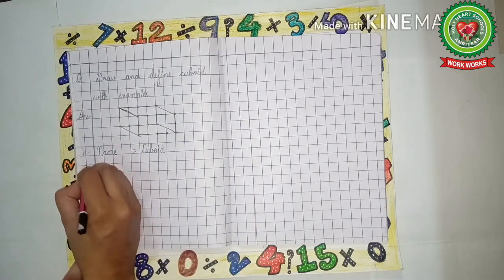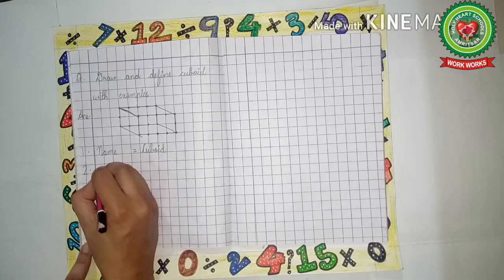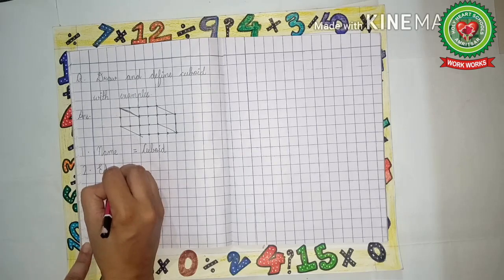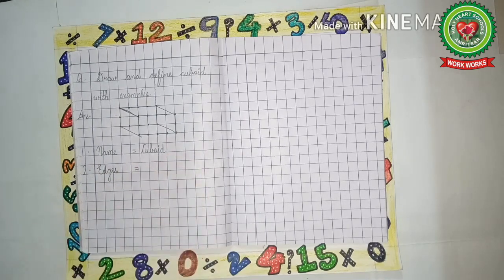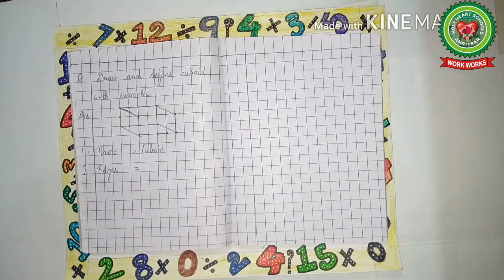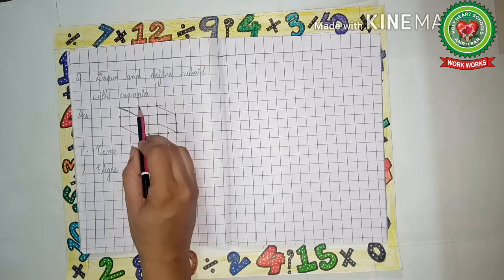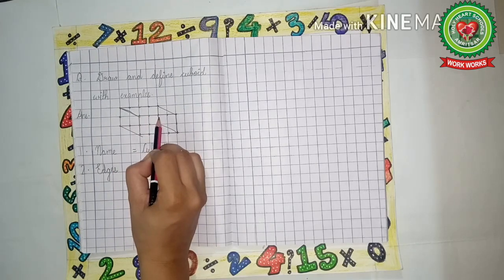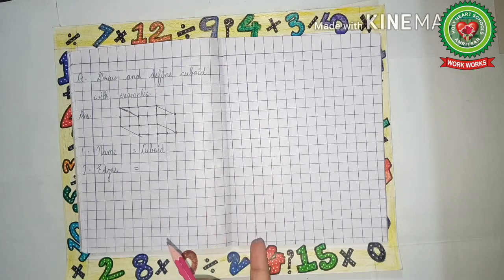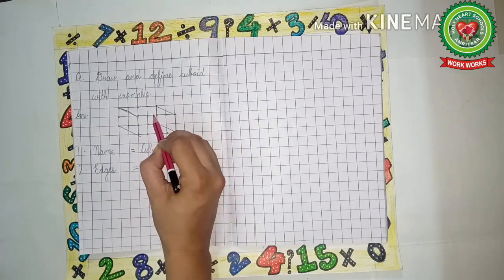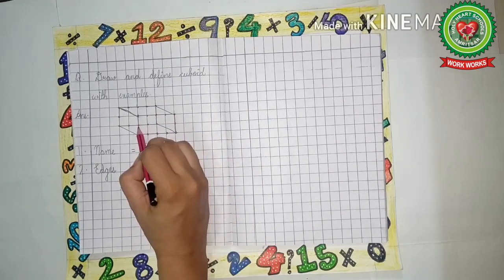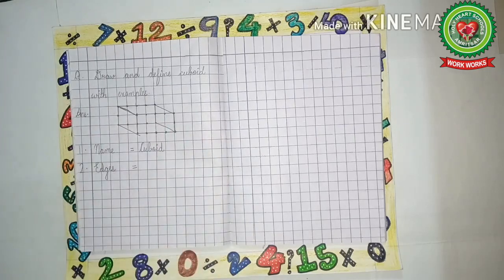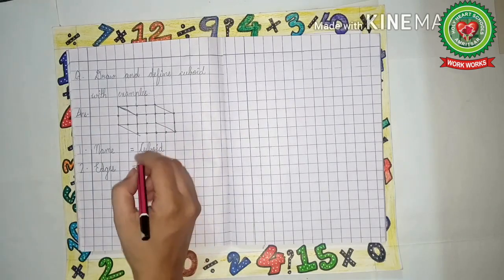Leave one line. Two dot: Edges. Edges are the sides, so let's count the sides. In first rectangle there are four sides—one, two, three, four. Now we will count the sides of second rectangle—five, six, seven, eight, nine, ten, eleven, twelve. So cuboid has twelve edges.